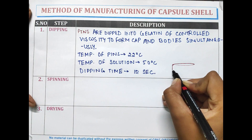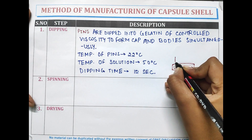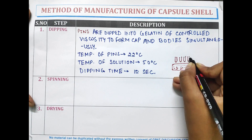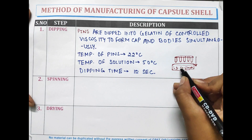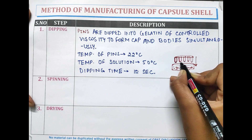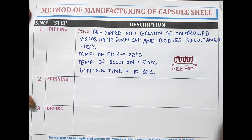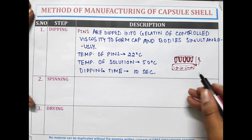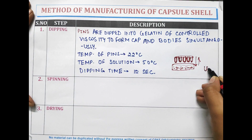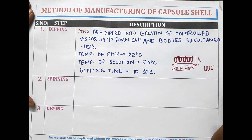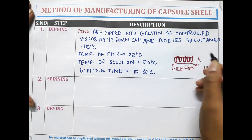In the dipping process, a vessel is filled with gelatin solution. Pins are dipped into it, and when these pins are dipped inside the gelatin, the gelatin sticks onto the pins. After 12 seconds, the pins are moved upward and gelatin shells have enclosed the pins, forming the empty gelatin shells. The smaller part is considered the cap and the larger part is the body.